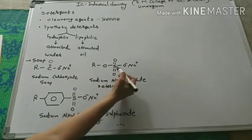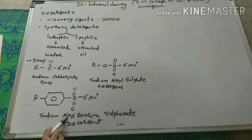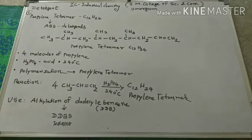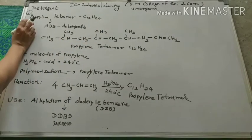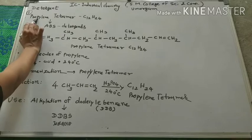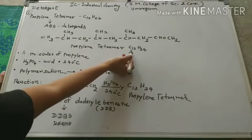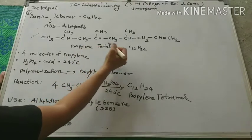Sodium alkyl sulfate is a detergent. Sodium alkyl benzene sulfate, ABS, has a structural formula. First, propylene tetramer — what is the molecular formula? C12H24. Propylene tetramer is used for the making of ABS type detergent. This is the structural formula of propylene tetramer.